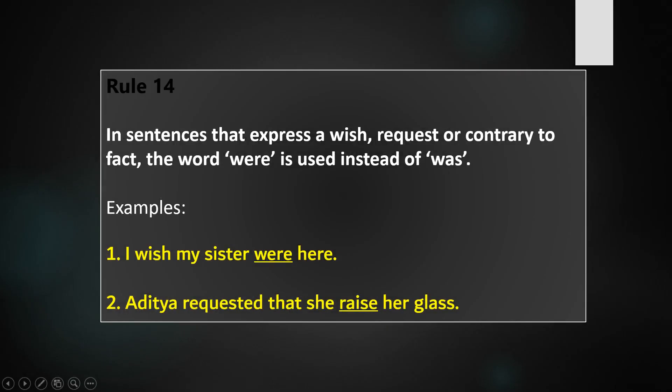Rule 14: In sentences that express a wish, request, or contrary to fact, the word were is used instead of was. For example: I wish my sister were here. Aditya requested that she raise her glass.